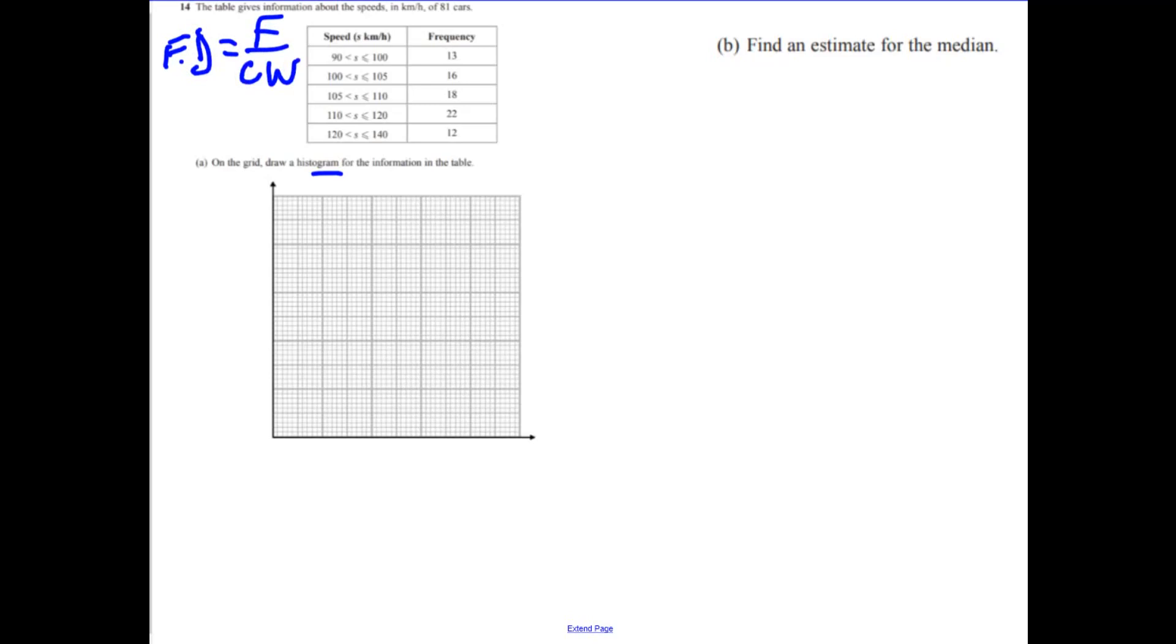So I'm not going to worry too much about the histogram. First, I'm just going to calculate these. So the first one is 13 divided by 10, because of that part just there. So 13 divided by 10 is 1.3. 16 divided by 5 is 3.2. 18 divided by 5 is